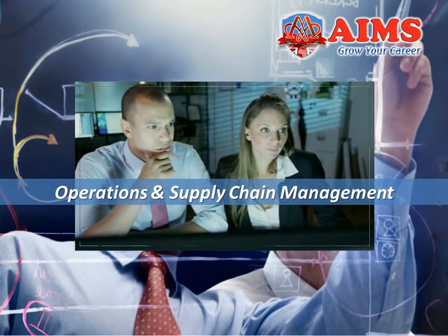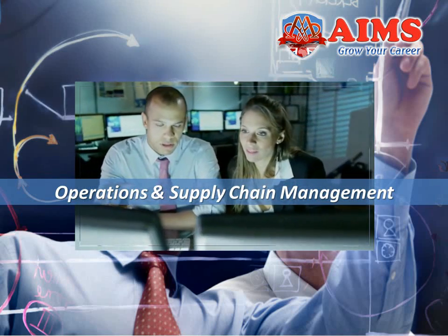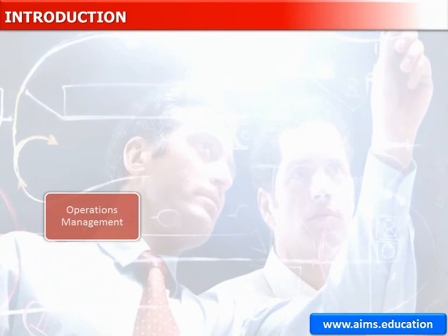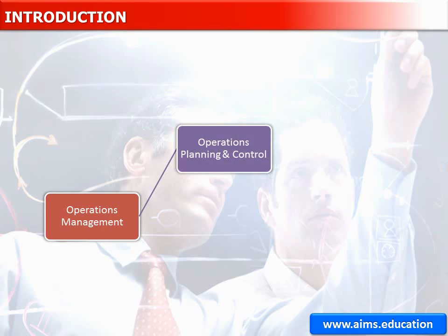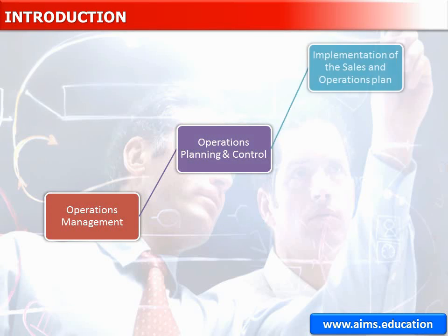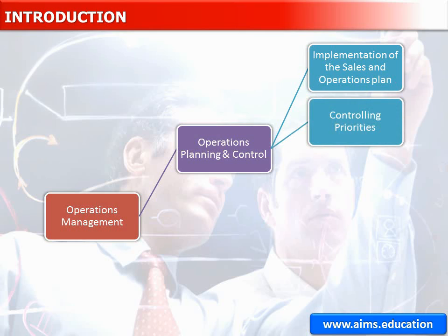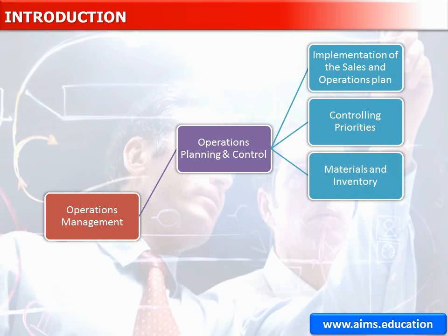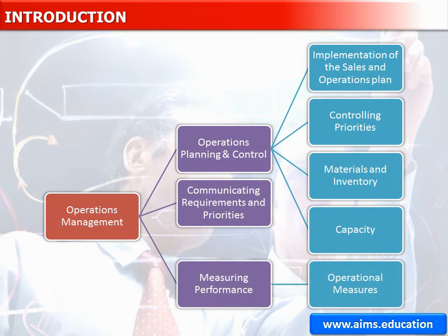Operations and Supply Chain Management. Due to the length of the first topic, operations planning and control has been divided into subtopics. Implementation of the Sales and Operations Plan provides an overview of strategy and operations planning and control. Controlling Priorities addresses master scheduling, rough cut capacity planning, and resource planning. Materials and Inventory addresses materials requirements planning and distribution requirements planning. Capacity addresses capacity management, planning and control, time horizons of capacity management, capacity requirements planning, and production activity control.